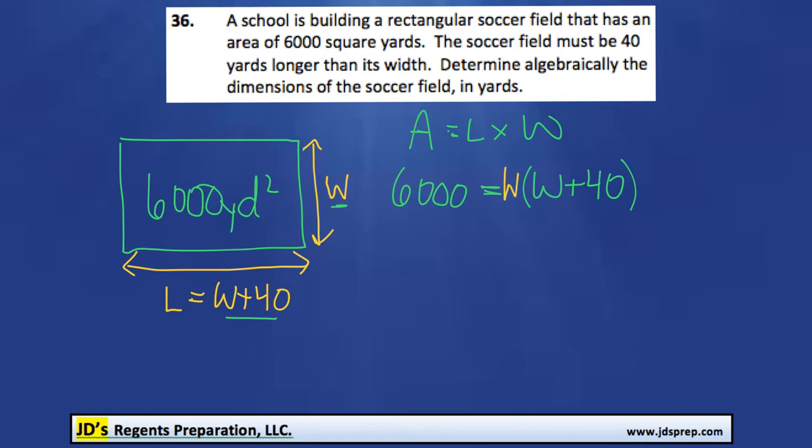Okay, so next thing we're going to do is basically just solve for W. I'm going to first distribute the W into the brackets here. Multiply this, and we'll get 6,000 equals W squared plus 40W.